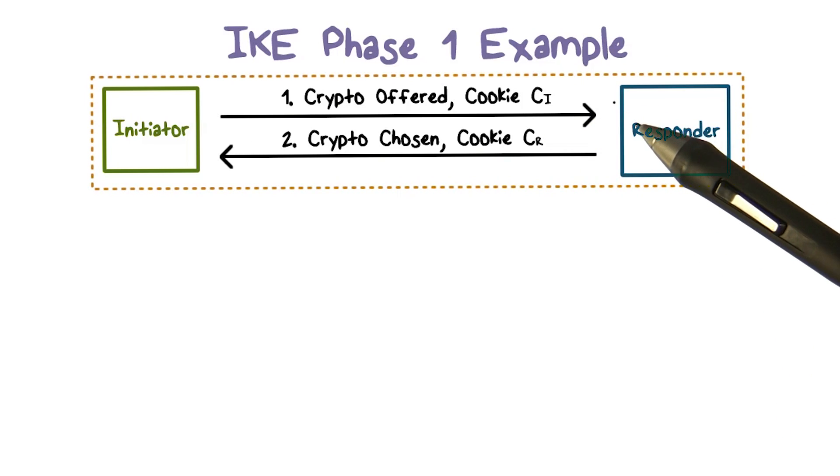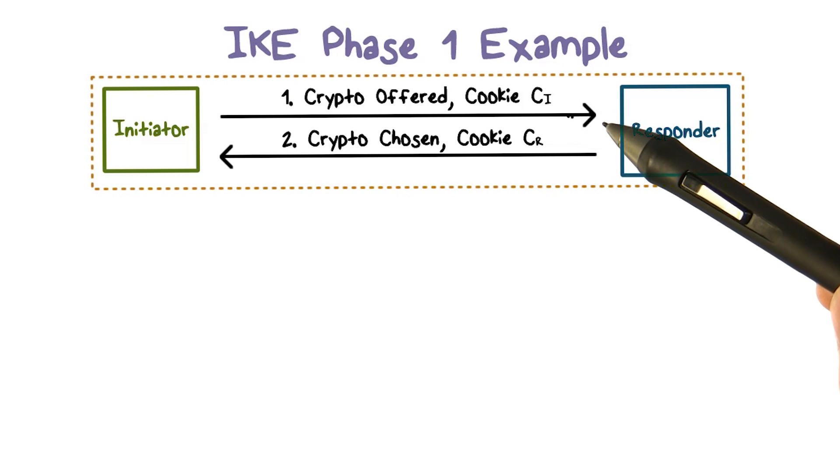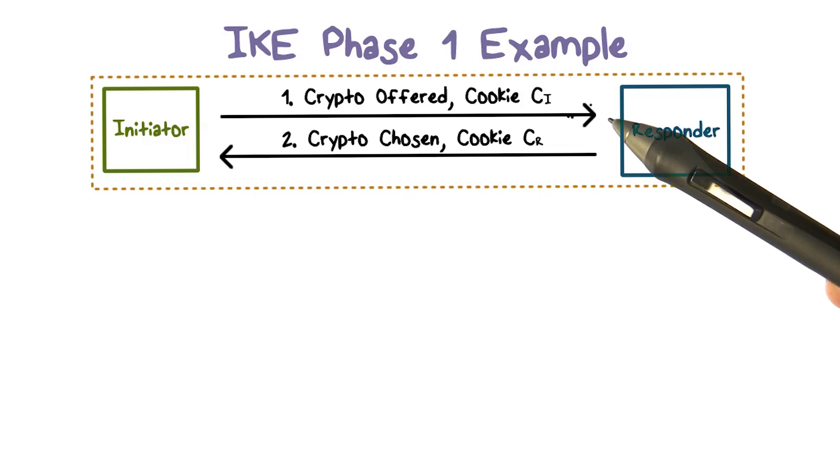The cookie can be easily computed by the initiator and can be easily verified by the responder. For example, this cookie can be computed as a hash over the initiator's IP address and the current timestamp together. The cookie is used to prove that the initiator has done some computation and is serious about following through the protocol.